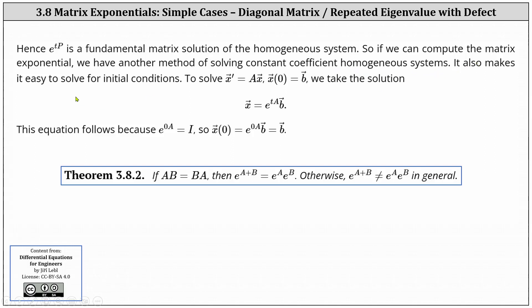It also makes it easy to solve for the initial conditions. To solve x prime equals a times x with the initial condition x of zero equals b, the solution is x equals e to the power of ta times vector b. This follows because e to the power of a at t equals zero is equal to the identity matrix, and therefore x of zero is equal to the identity matrix times vector b, which does return vector b.